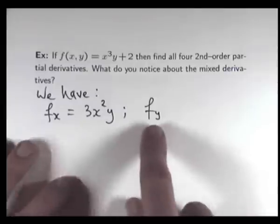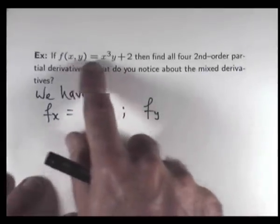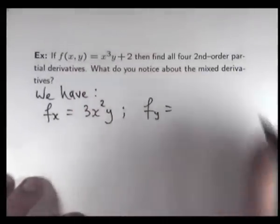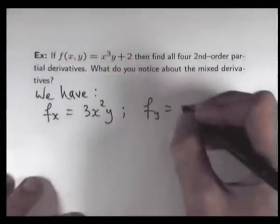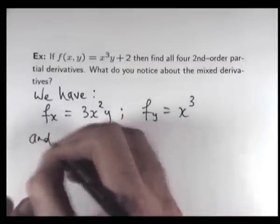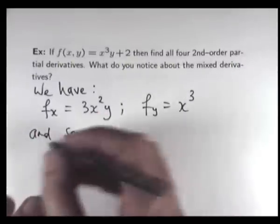For df/dy, or f sub y, imagine x is a constant and differentiate normally with respect to y. So this is going to become x cubed.